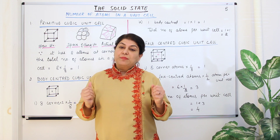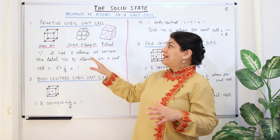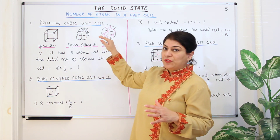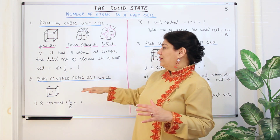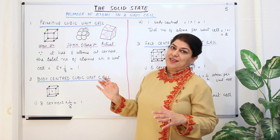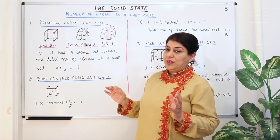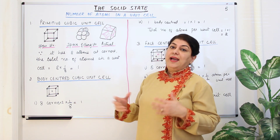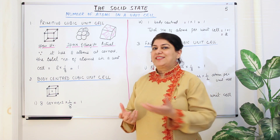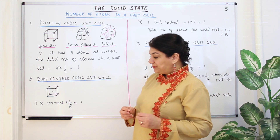If we know the volume we can calculate the density. In your syllabus you have the simplest types of unit cells: the primitive cubic, the body-centered cubic, and the face-centered cubic unit cells. Let us start with our study of these.